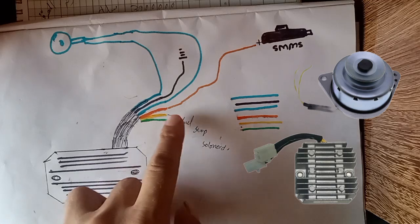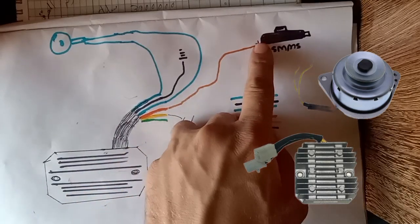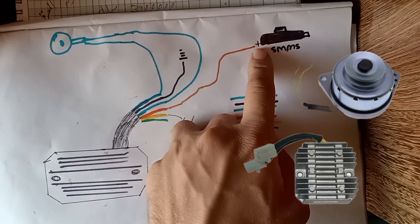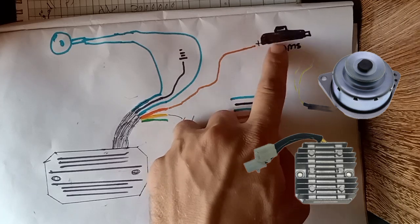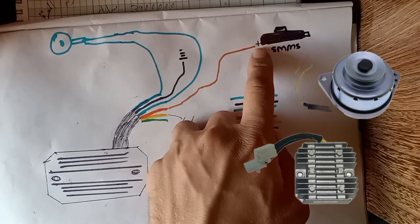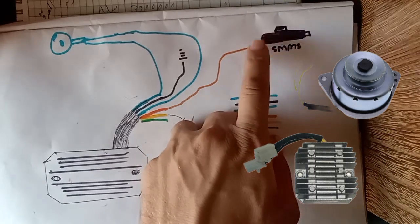This red wire is directly going to the starter motor positive post, which is connected with the battery. This is the starter motor connection.